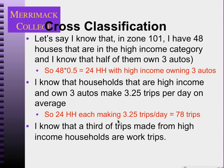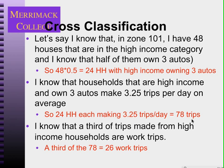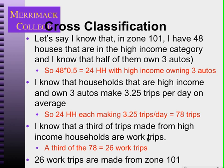Let's say I know that a third of the trips made from high-income households are work trips. So a third of those 78 trips are work trips made to go from home to work, meaning there are 26 work trips made from zone 101.